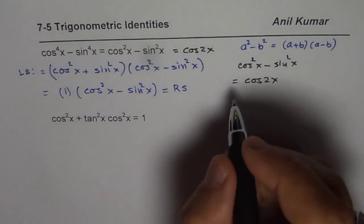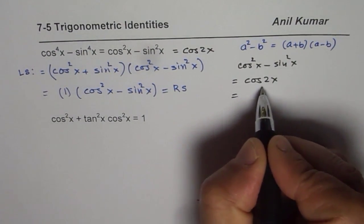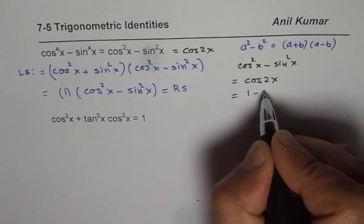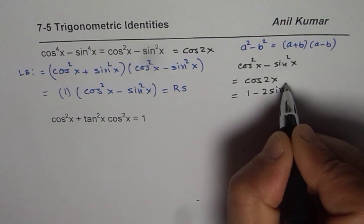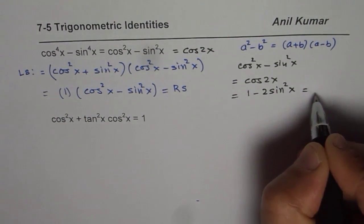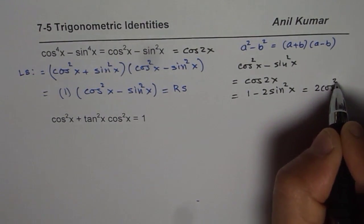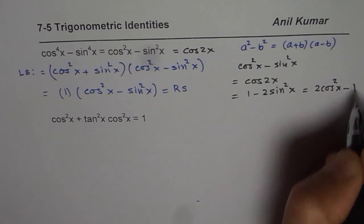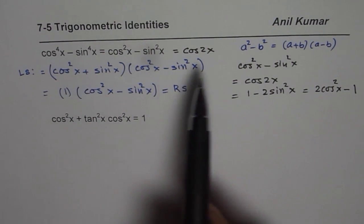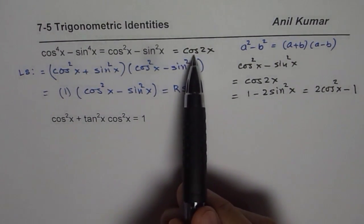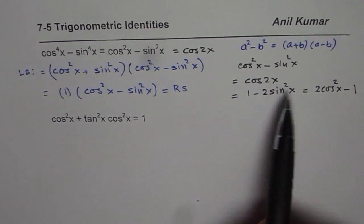Another important thing which you know is that cos 2x can also be written as 1 minus 2 sin square x or 2 cos square x minus 1. So based on this identity I could give you on the right side any of these terms.